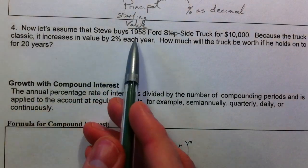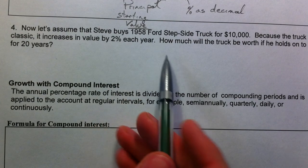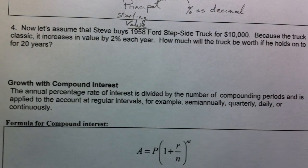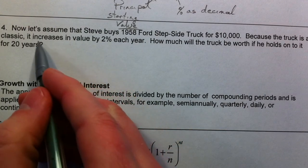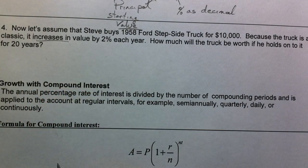All right, so now let's assume that Steve buys a 1958 Ford Stepside truck for $10,000. Now this is a classic. Because the truck is a classic, it increases in value by 2% every year.